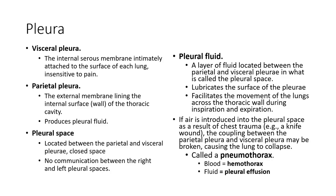The next structure we'll discuss is our pleura. We have two basic layers: our visceral pleura, which is the internal serous membrane that attaches to the surface of each lung — analogous to the pia mater in the brain or the epicardium in the heart — and our parietal pleura, which has an intimate connection to the chest wall. The combination of these two separate layers creates the pleural space. It's a closed, potential space, independent from right to left side. This pleural space creates a negative pressure environment which allows the lungs to stay inflated.